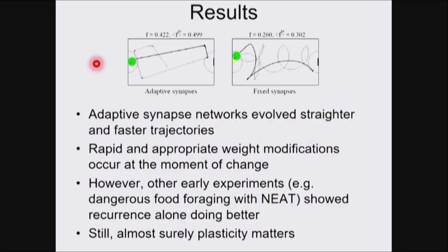We found that in some experiments with NEAT — for example food foraging where some food is poison and some is not — recurrence alone actually did better than evolving plasticity, which triggers some uncertainty about whether plasticity is essential. Could there have been a human brain without plasticity? Almost surely plasticity matters in general, because the size of networks you would need if using only recurrence for memory-based tasks would be astronomically larger. So plasticity as a practical matter is probably essential.